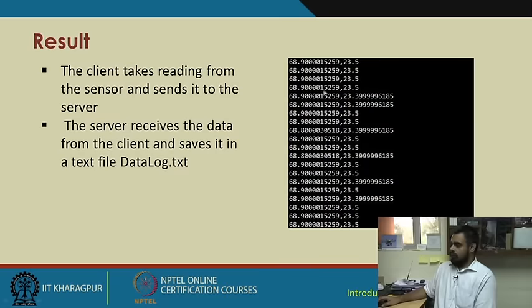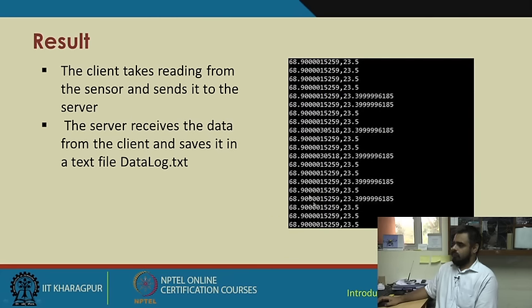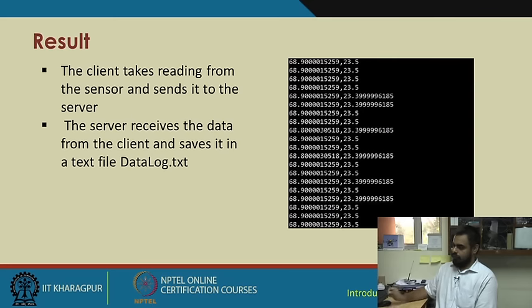The output will look like this: temperature readings — first is humidity and the next is temperature, separated by a comma. The client will keep on streaming this data again and again with new values, not old redundant values. Every data poll it will generate a new value.